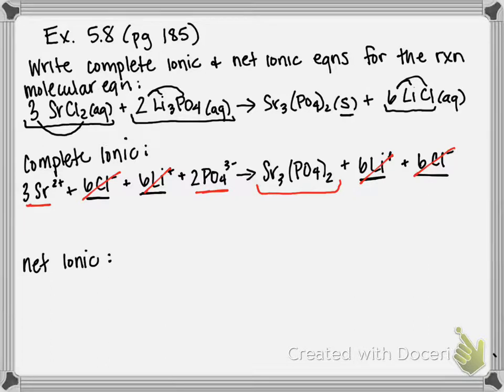We have 3 Sr2+ plus 2 PO4 3-. These exist as ions on the reactant side, but on the product side, they stay together in a solid. So even though these are technically the same elements and ions written, they are not the same. They don't exist in the same form on the reactant side. They're ions on the product side. They are a solid.